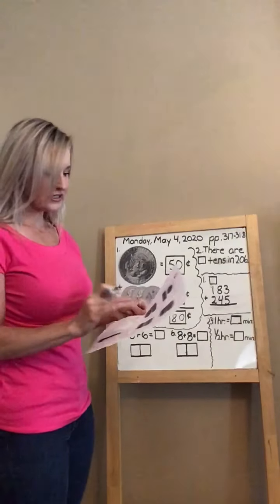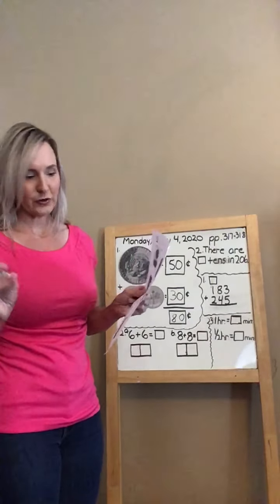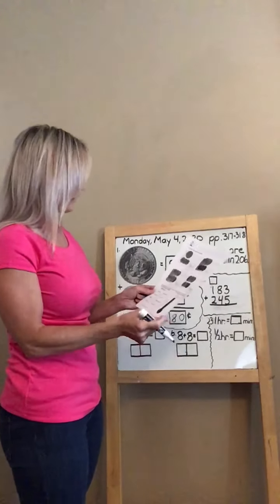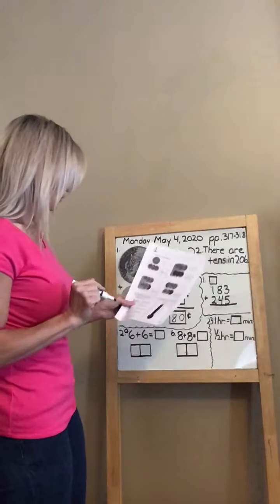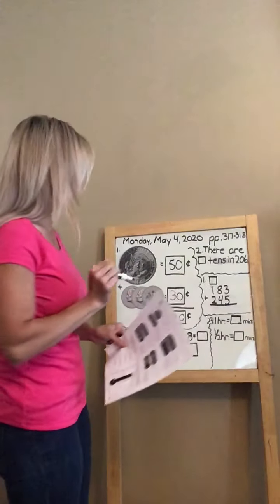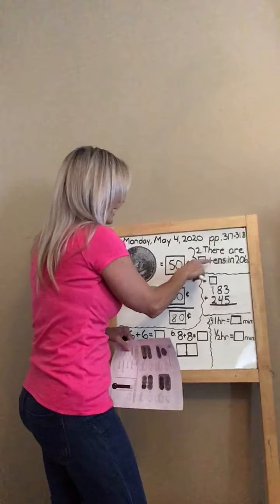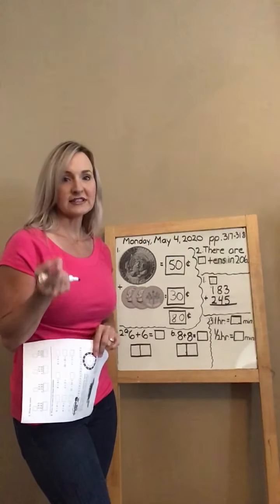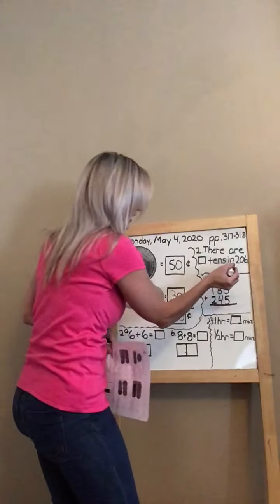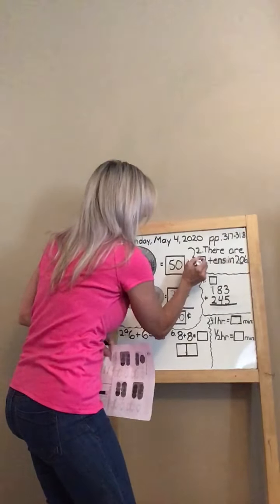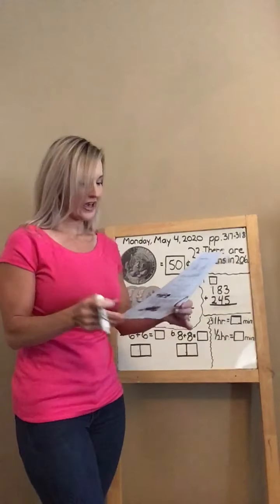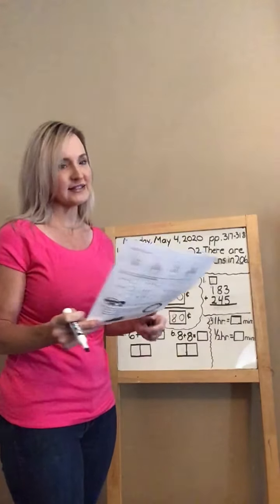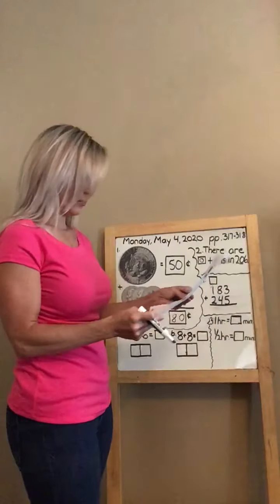As you finish the remaining problems in number one, ask yourself which coin you're looking at and remember the value. Now number two on page 317 says: fill in the box with the correct answer. The first one asks how many tens are in 206. Boys and girls, look in the tens place — there are zero tens in 206. As you do those problems, ask yourself which place you're looking at.